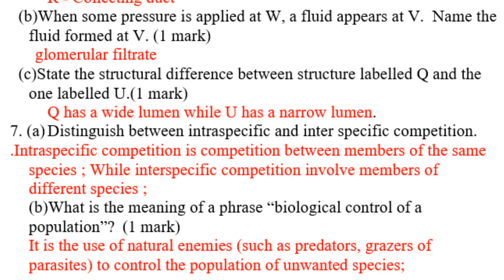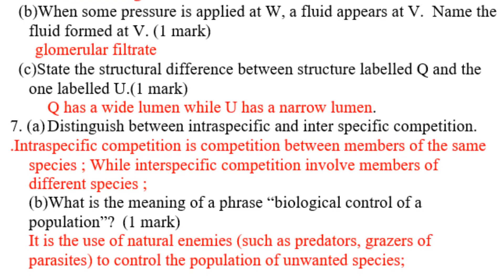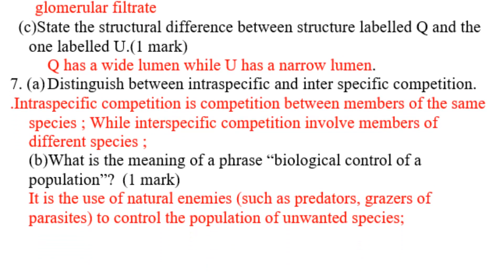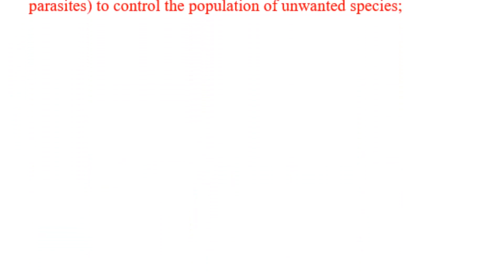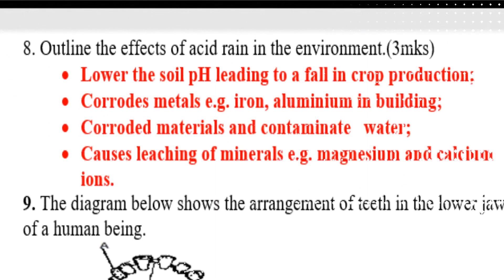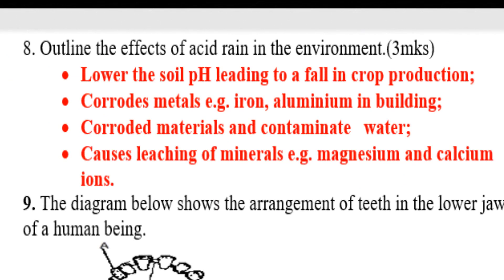What is the meaning of biological control of a population? It is the use of natural enemies such as predators, parasites, and other organisms to eliminate or control a species.